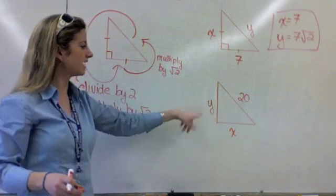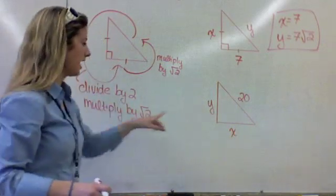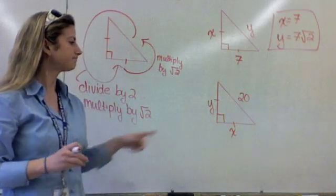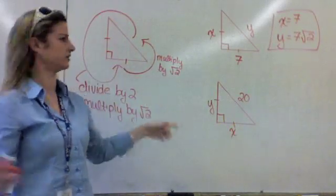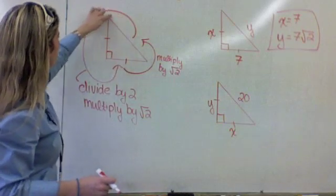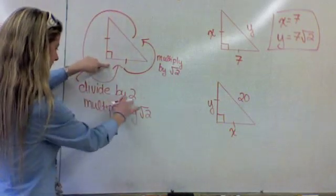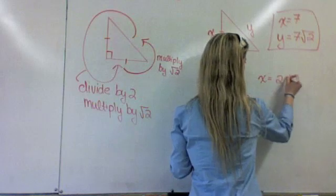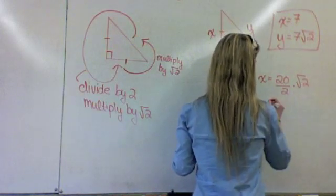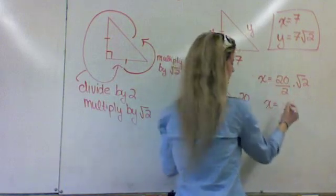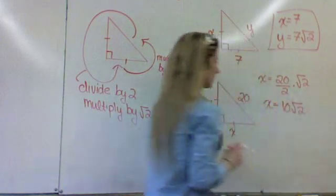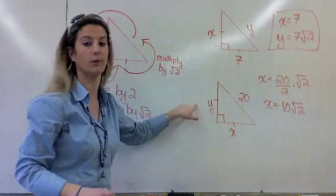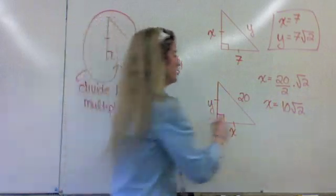Now let's try this one. Instead of having a leg, we have the hypotenuse. This is a 45-45-90 triangle. So I have the hypotenuse — how do I go to the leg? The trick says divide by 2 and multiply by root 2. So x is going to equal 20 divided by 2, then times root 2, which gives us 10 root 2. And because it's a 45-45-90 triangle, x and y are the same thing, so y is also 10 root 2.